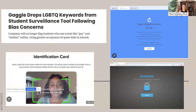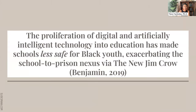The rise of school surveillance technologies has its own issues — Proctorio, Gaggle, which is supposed to prevent school-based violence. Studies show these technologies have limitations that I argue make Black students less safe in schools, even though they're positioned to advance equity and access. The proliferation of digital and AI technologies into school spaces has actually made them less safe, exacerbating the school-to-prison nexus — what Dr. Benjamin calls the 'New Jim Code.'